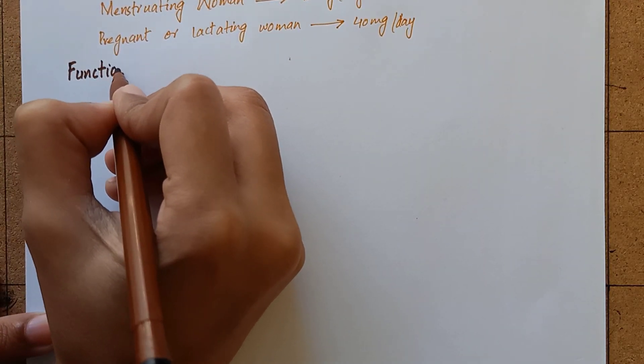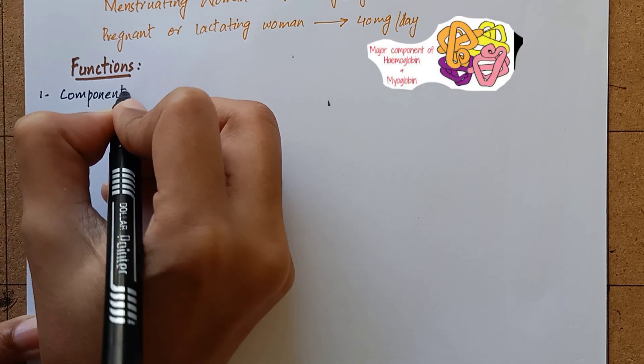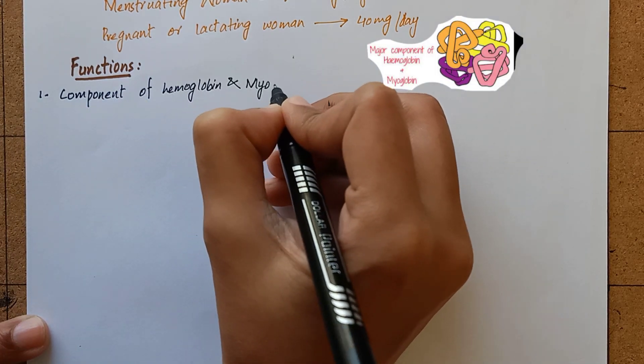Coming to the biochemical functions, iron is a component of hemoglobin and myoglobin which are required for the transport of oxygen and carbon dioxide.